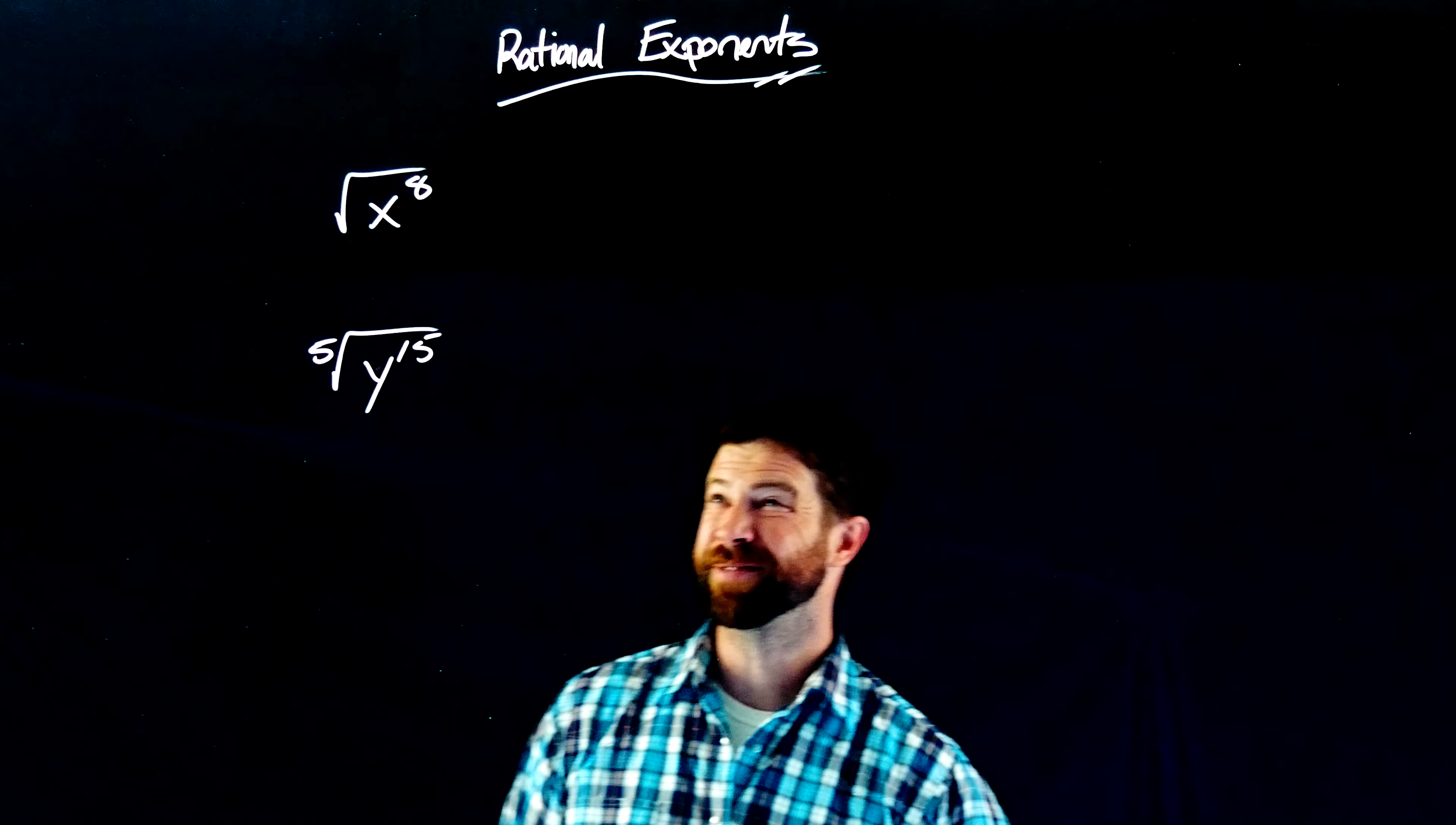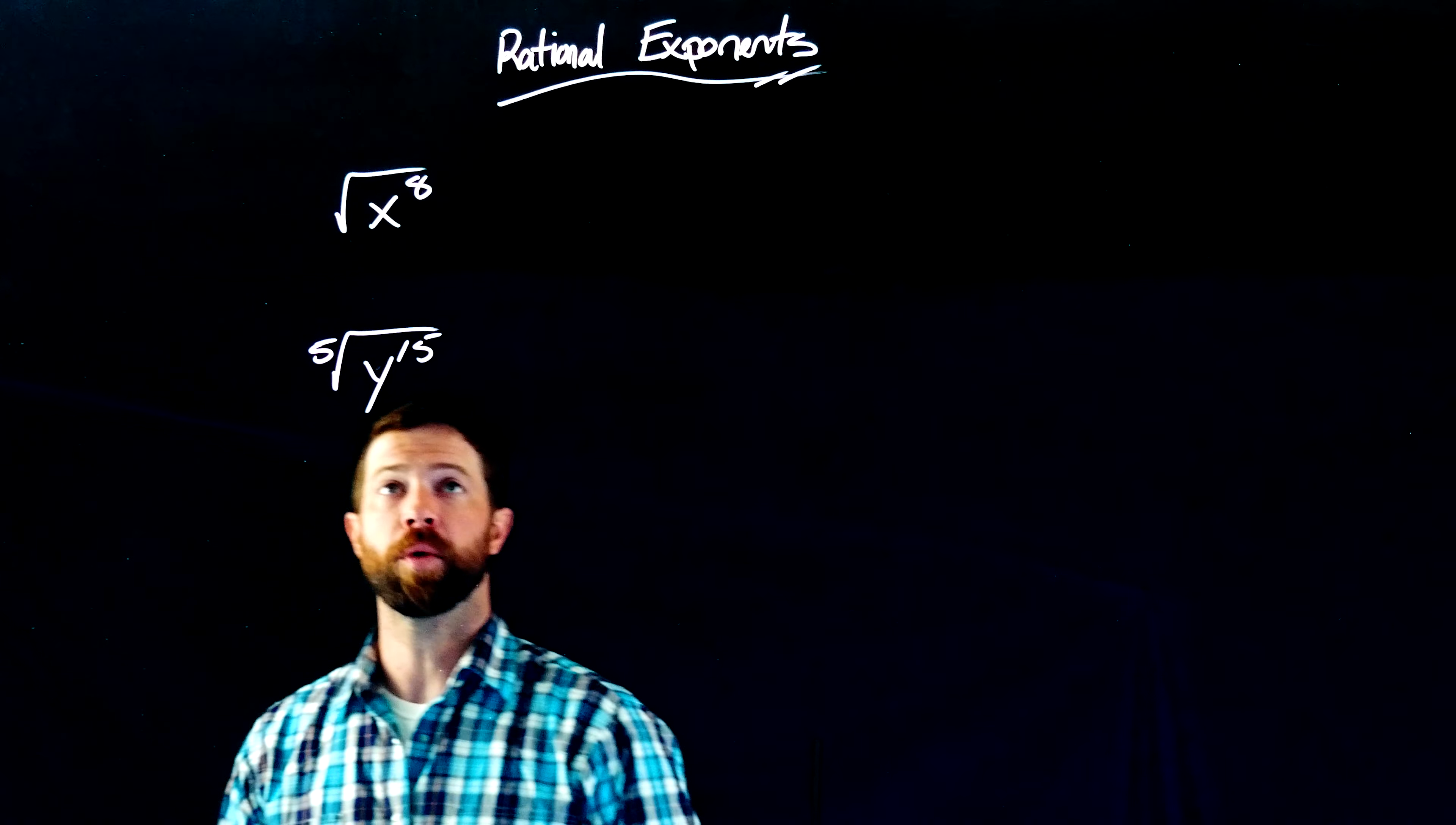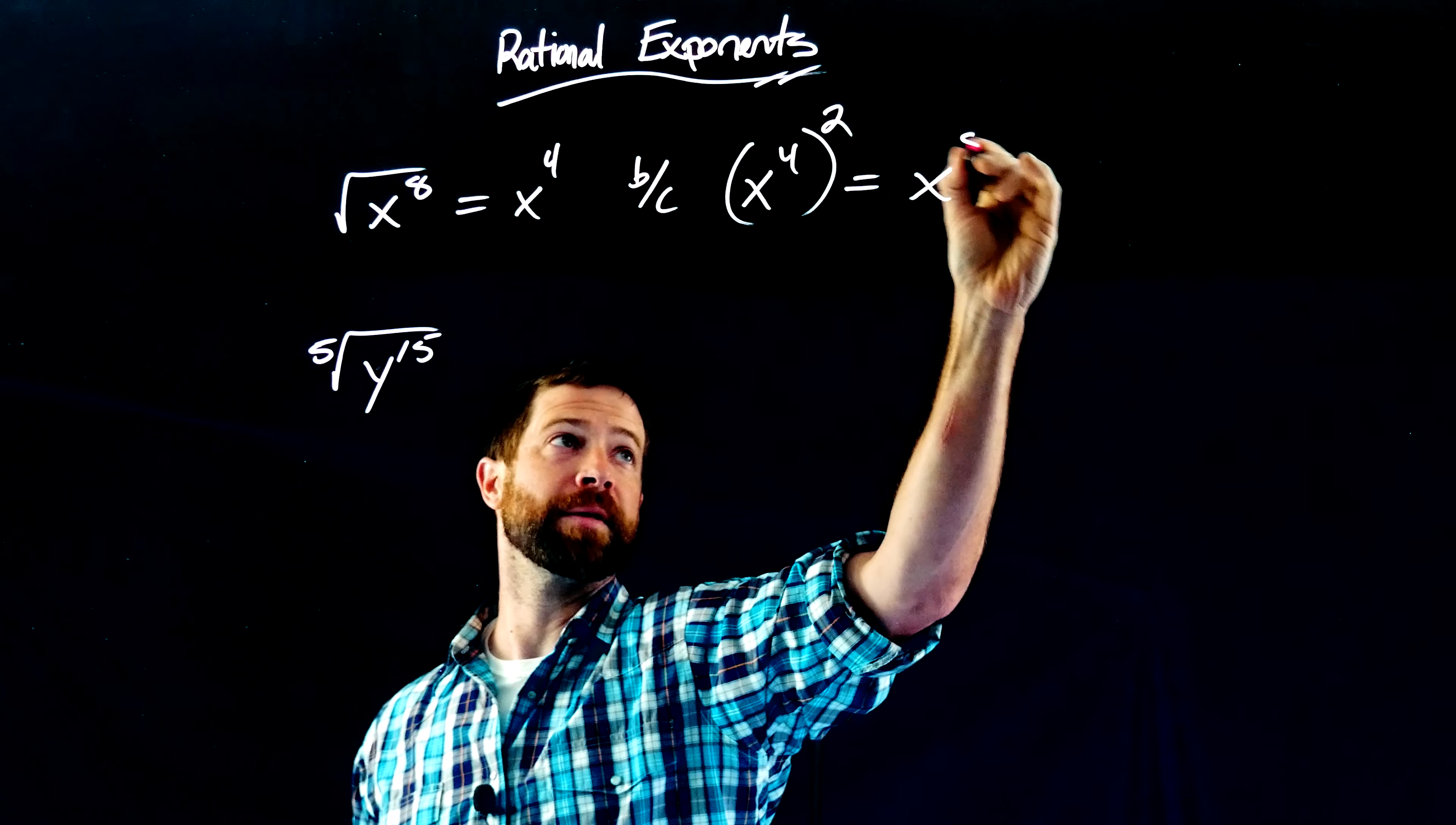The square root of x to the eighth. You're looking for the expression that is squared to get x to the eighth. That's the whole reason for the square root. We know that this answer is x to the fourth, and the reason it's x to the fourth is because x to the fourth squared equals x to the eighth.